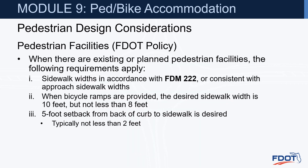Pedestrian facilities — the DOT policy here: when there are existing or planned pedestrian facilities, the following requirements apply. Sidewalk widths should be provided in accordance with FDM 222, or consistent with the approach sidewalk widths. When bicycle ramps are provided, the desired sidewalk width is 10 feet, but not less than 8 feet. A 5-foot setback from the back of curb to sidewalk is desired, typically not less than 2 feet.